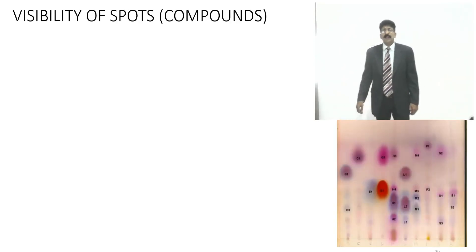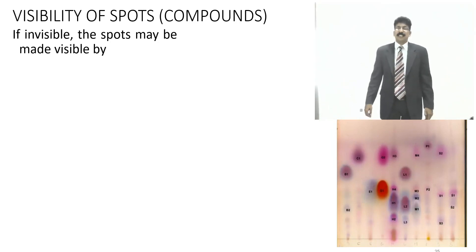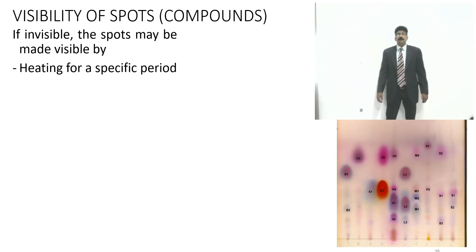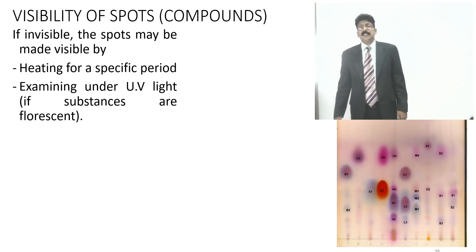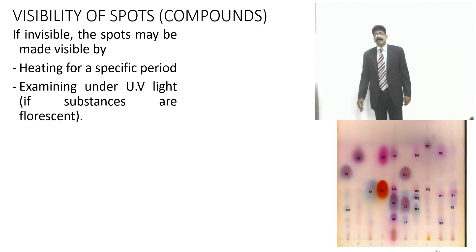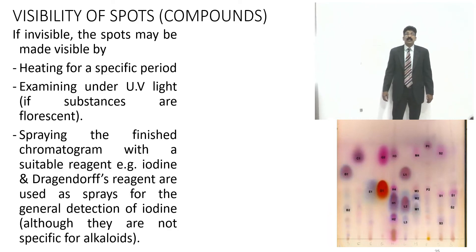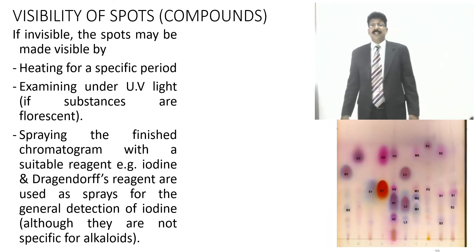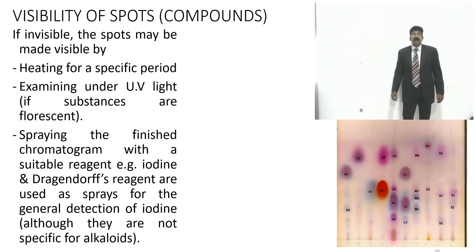Visibility depends on the chemical nature of the phytochemical compound. Spots may be made visible by heating, or by examining under UV light — substances fluorescent at 254 nm and 366 nm can be distinguished under white light. Spraying the finished chromatogram with suitable reagents, or using an iodine chamber, can identify various spots. Dragendorff reagent can be sprayed for alkaloids.